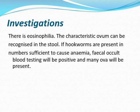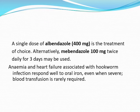There is eosinophilia and the characteristic ovum can be recognized in the stool examination. If hookworms are present in numbers sufficient to cause anemia, fecal occult blood testing will be positive. A single dose of albendazole 400 mg, or alternatively mebendazole 100 mg twice daily for three days, may be used. Anemia and heart failure associated with hookworm infection respond well to oral iron, and severe blood transfusion is rarely required.